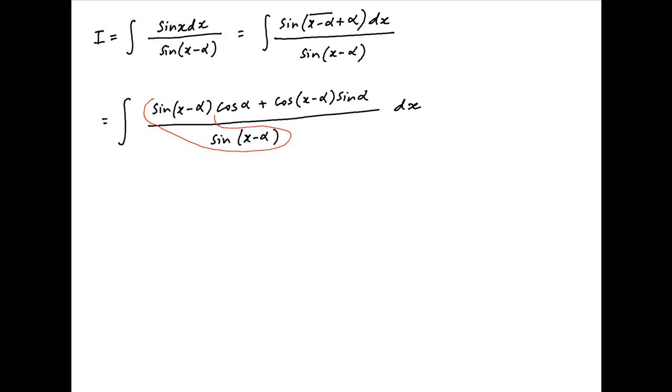Now this can be broken into two components. In the first component, sine of x minus alpha cancels across the numerator and the denominator, and therefore the first term is equal to integral cos alpha dx.